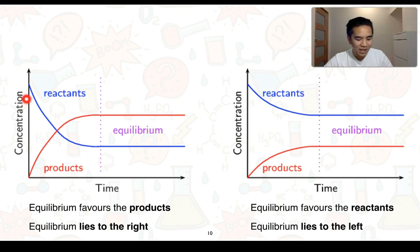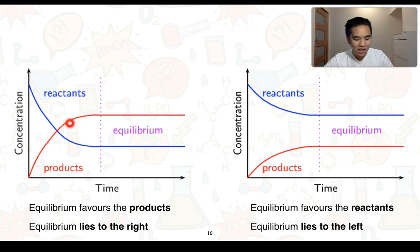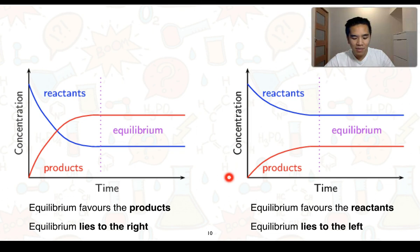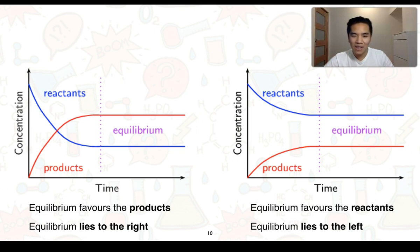On the left graph, reactants start at a high concentration, then level off at a constant concentration when equilibrium is reached. Products increase but also become constant. In this case the product concentration is higher than the reactants, so we say equilibrium favours the products — or the equilibrium lies to the right. On the right graph, the reverse is true: reactant concentration is higher than products at equilibrium, so we say it favours the reactants, or equilibrium lies to the left. Note that the concentrations of reactants and products very rarely equal one another — at equilibrium, it's the rates that are equal, not the amounts or concentrations.